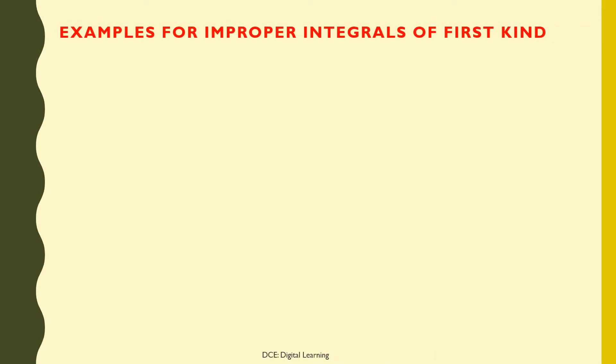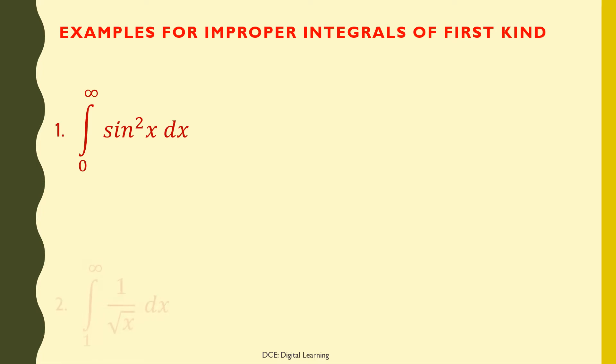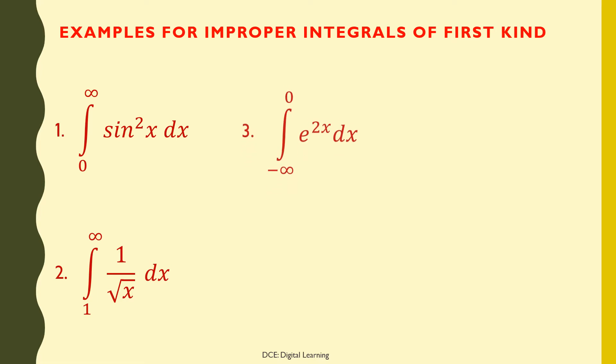Examples of improper integrals of first kind: (1) integral of sin²x dx from 0 to infinity; (2) integral of 1 over √x dx from 1 to infinity — in these two integrals the upper limit is infinity. (3) integral of e^(2x) dx from minus infinity to 0; (4) integral of sinh(x) dx from minus infinity to 0 — in these two integrals the lower limit is minus infinity.